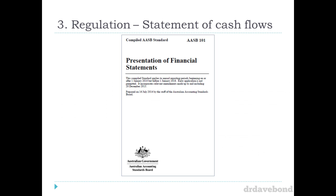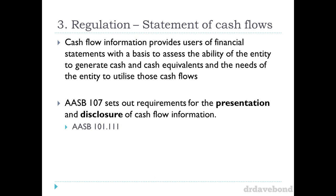Back on topic. Statement of cash flows. We need it because AASB 101 requires us to include it. Cash flow information provides users with a basis to assess the ability of the entity to generate cash and cash equivalents and the needs of the entity to utilize those cash flows. It's about taking information about cash flows and telling the market what's going on. Why do we need a cash flow statement if we've got a balance sheet? We've got an opening and closing balance of cash — if cash went from $1,000 to $5,000, you've got a net inflow of $4,000. Why do we need to break it down further?